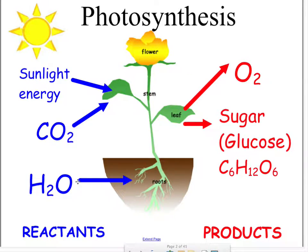Sugar is what the plant needs in order to grow, in order to reproduce, in order to live. It also creates oxygen as a byproduct - it's waste.